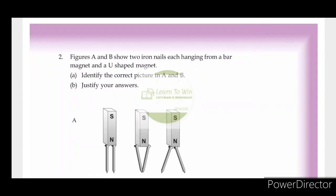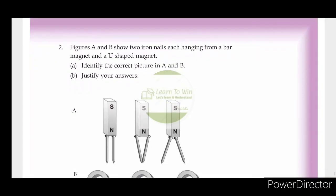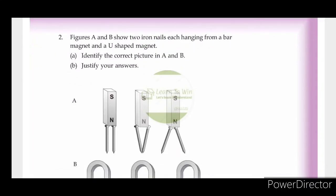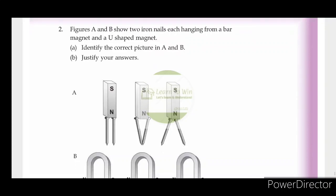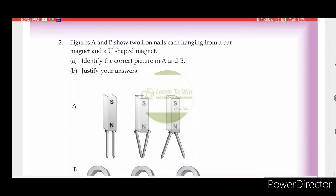Figures A and B show two iron nails each hanging from a bar magnet and a U-shaped magnet. Identify the correct picture in A and B. Justify your answers.